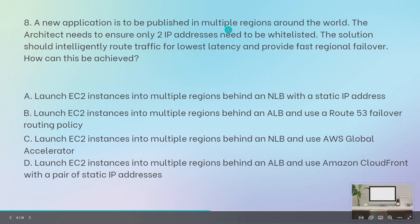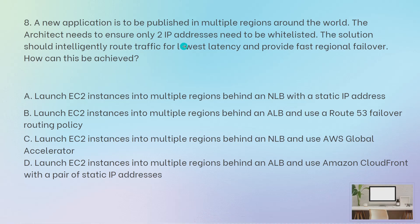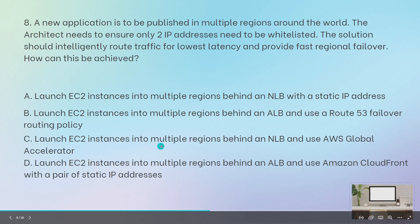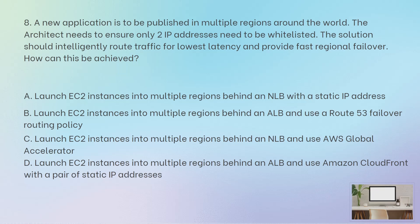A new application needs to be published in multiple regions around the world. As an architect, you need to ensure that only two IP addresses need to be whitelisted. The solution should intelligently route traffic for lowest latency and provide fast regional failover. This is the definition of AWS Global Accelerator. IP address whitelisting is possible with a Network Load Balancer. The correct answer is: launch EC2 instances into multiple regions behind an NLB and use AWS Global Accelerator.